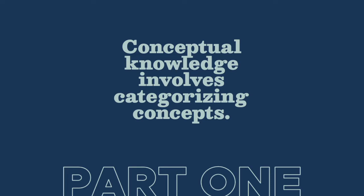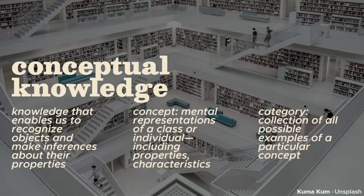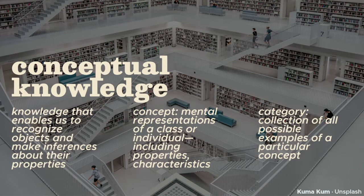Conceptual knowledge involves categorizing concepts. Look around you and briefly fixate on one object at a time. Quickly try to say what it is and what it's used for. You'd notice that you were able to do this very quickly. What helped you do this is conceptual knowledge — your understanding of what things are called, what things share the same name, what you think their properties or functions are, and what other things are related to them. Each entry in your conceptual knowledge library is called a concept: a mental representation of an individual object or a class of objects, including defining characteristics or properties. Think of them as nouns.